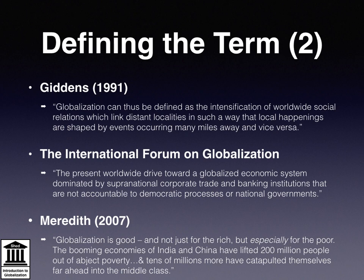The second definition, from the International Forum on Globalisation, is indicative of those who perceive globalisation as a nakedly aggressive economic force, saying: 'The present worldwide drive toward a globalised economic system dominated by supranational corporate trade and banking institutions that are not accountable to democratic processes or national governments.' Robin Meredith, however, argues the opposite — that globalisation is good, and not just for the rich, but especially for the poor. 'The booming economies of India and China have lifted 200 million people out of abject poverty, and tens of millions more have catapulted themselves far ahead into the middle class.'